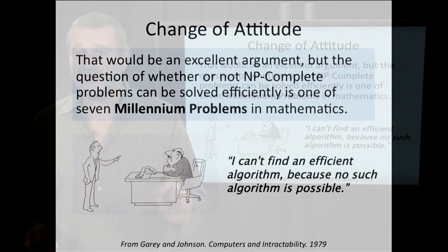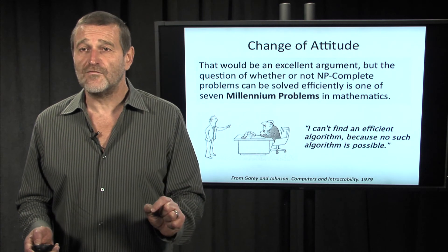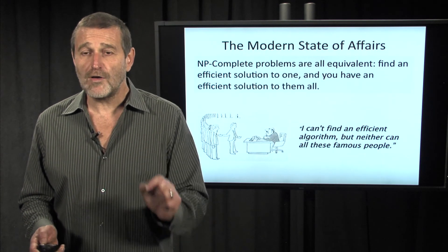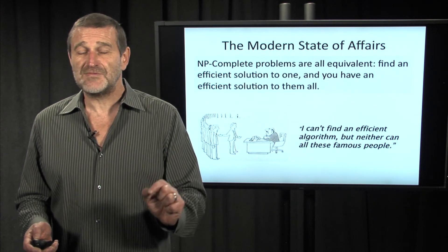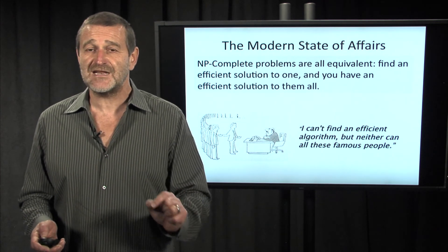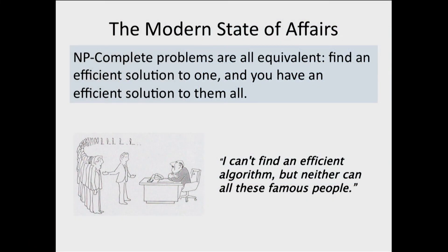However, what computer scientists were able to prove is that all NP-complete problems, which means thousands of problems from this class, are equivalent. Or in other words, if you solve any of these problems, you will solve the Hamiltonian path problem.